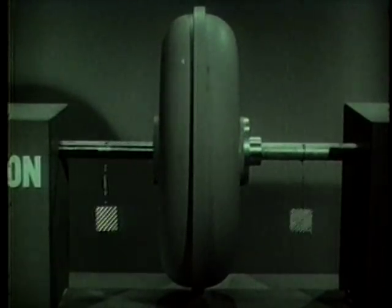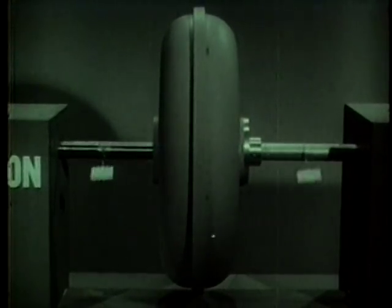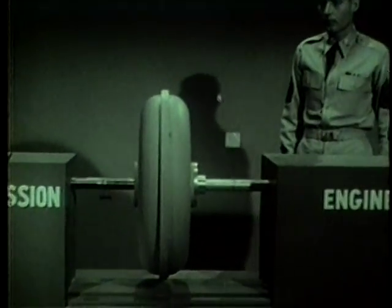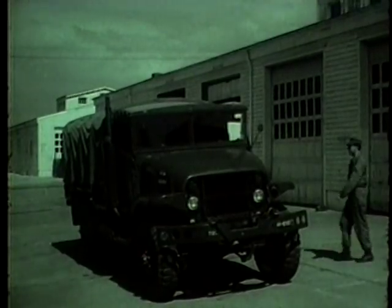It must be remembered that since the fluid coupling only replaces the conventional clutch, it is always used in conjunction with some type of transmission. Now that we know the parts of the fluid coupling and the way it operates, let's see it in action on a vehicle.